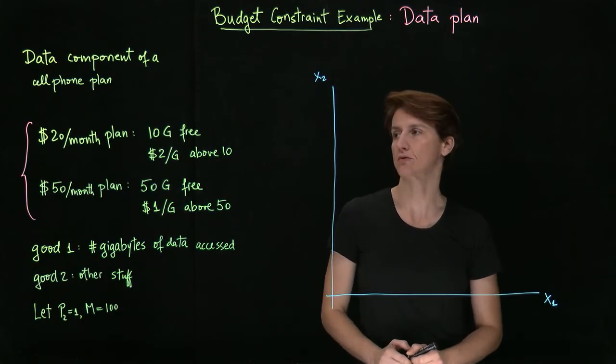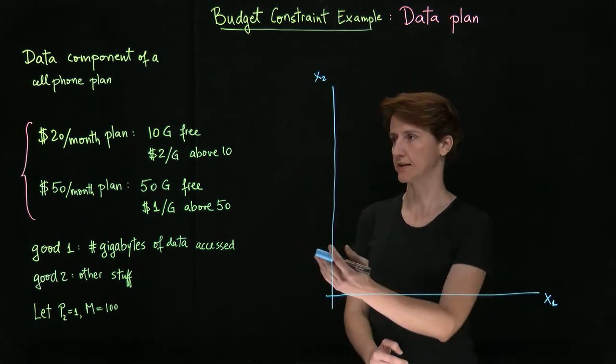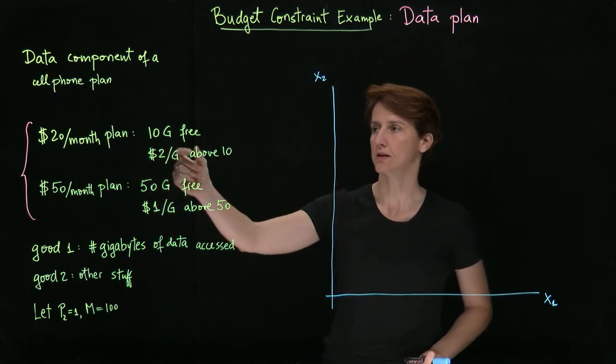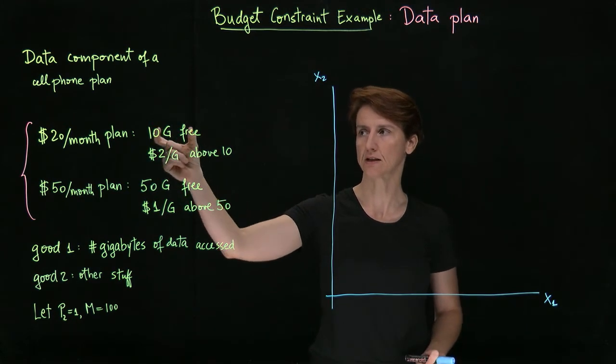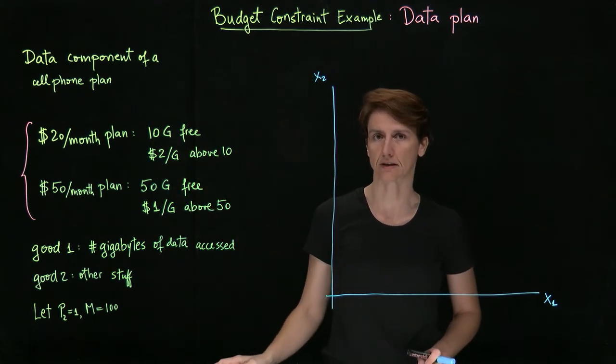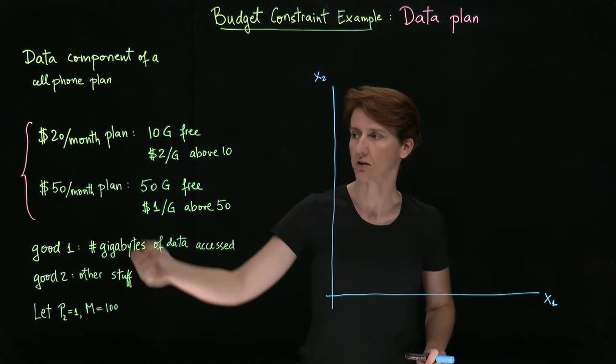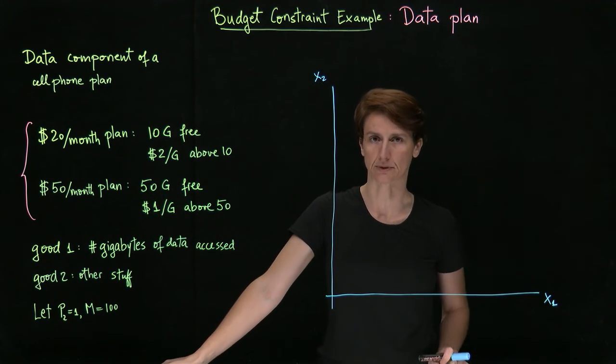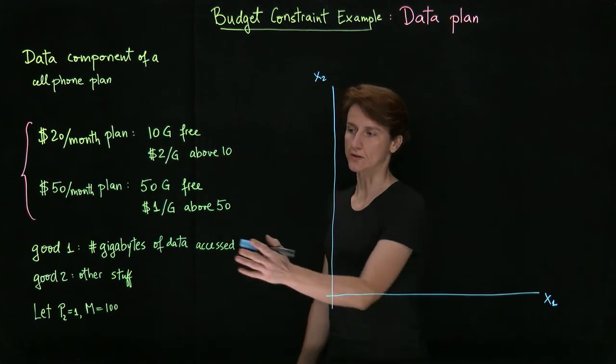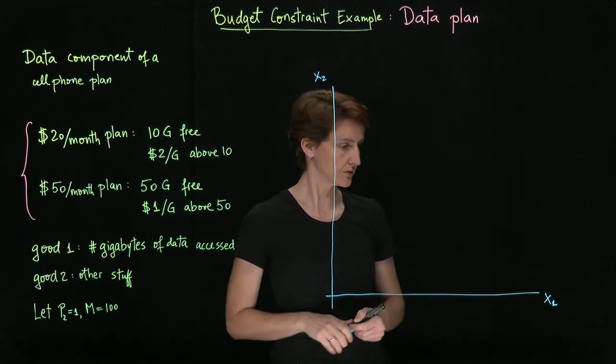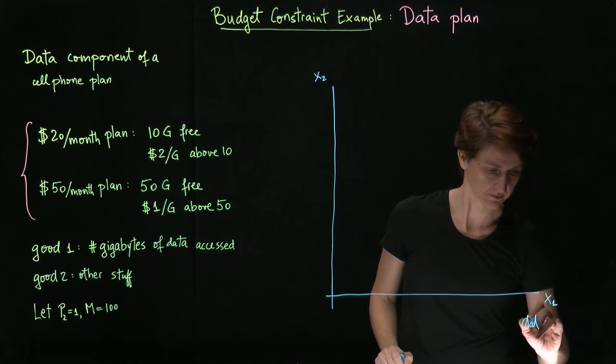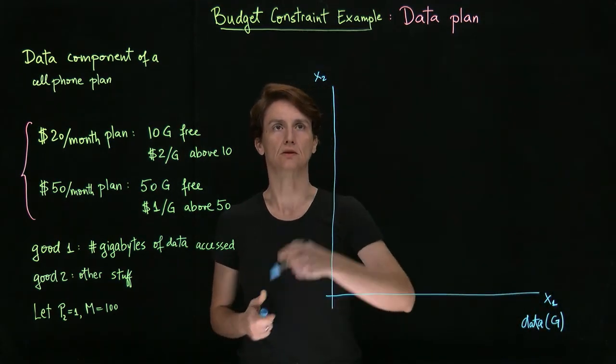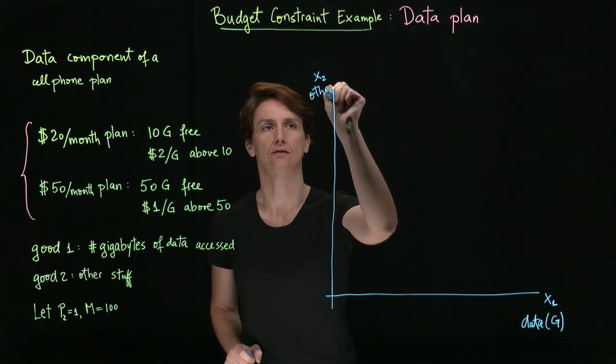Let's consider another example. Suppose that you're trying to decide what data plan to purchase for your cell phone plan, and you have the following two options. You could buy a twenty dollar one that gives you access to ten gigabytes for free, and then above that you have to pay two dollars for every gigabyte you use. Or you could buy the fifty dollar a month plan, which includes fifty gigabytes free, and above that you have to pay one dollar per gigabyte. So the good of interest now will be the amount of data you use, measured in gigabytes. And on the vertical axis we will again group other things—the composite good, meaning whatever is something we might want to buy but that is not our main focus.